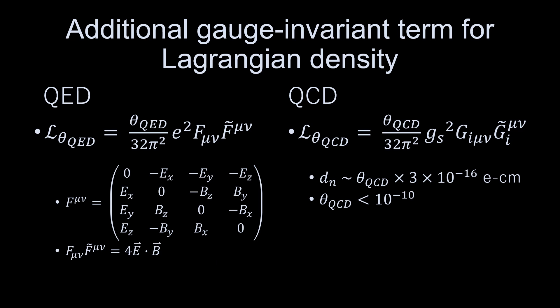As there is no known reason in QCD for it to necessarily be conserved, this is a fine-tuning problem known as the strong CP problem.